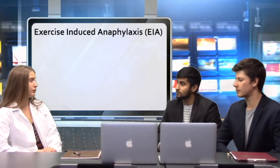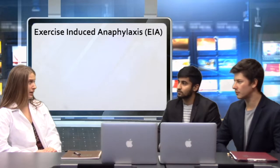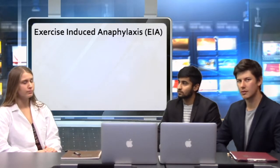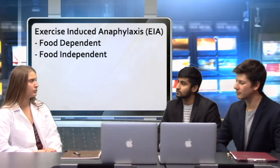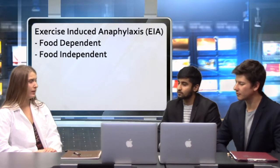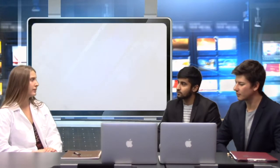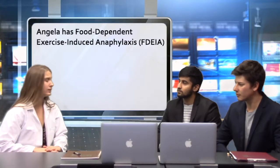So, what does she have then? Well, I don't know her specific case and I don't know all the details, but to me it seems that Angela has a specific type of exercise-induced anaphylaxis, or EIA. What is that? Well, there are two different types of EIA, food-dependent and food-independent. In Angela's case, she has food-dependent exercise-induced anaphylaxis, or FDEIA.